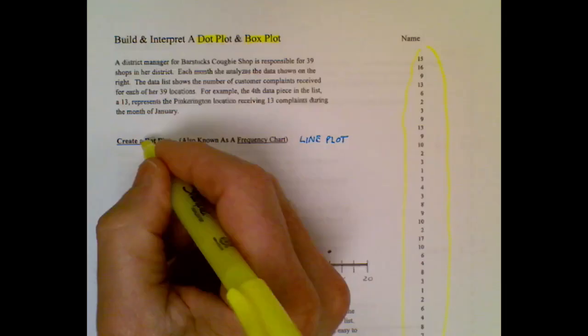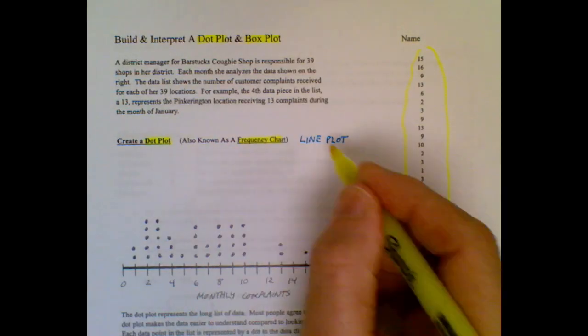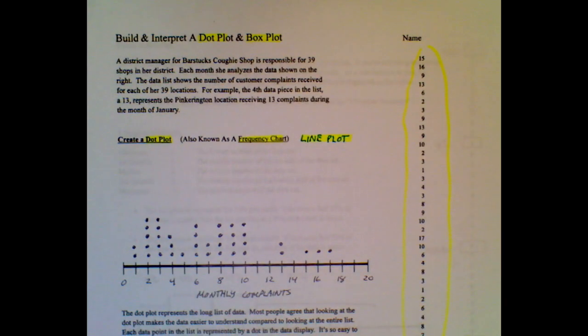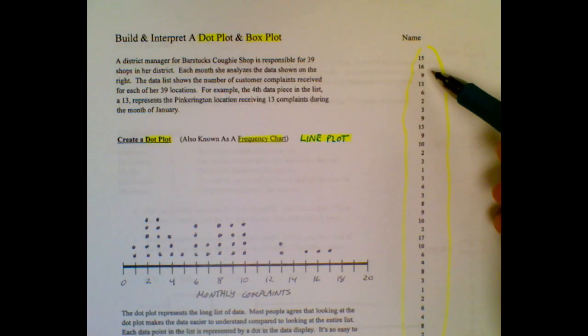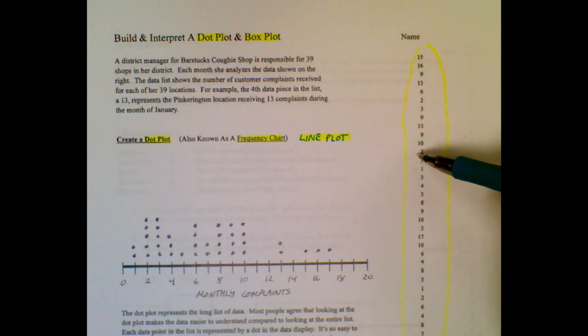We're going to start with the dot plot, but know that sometimes people call this a frequency chart, sometimes they call it a line plot, but in the end it's taking this list of data and turning it into a bunch of dots. What this data is is representing the number of customer complaints at different Barstucks coffee shops locations.